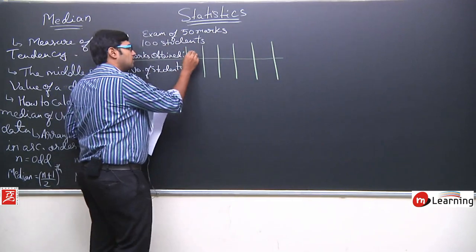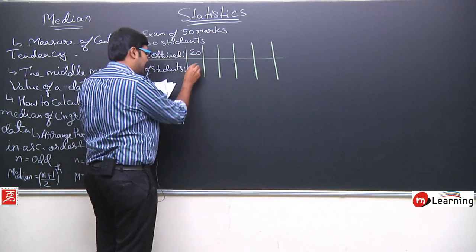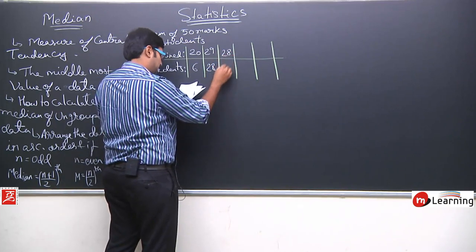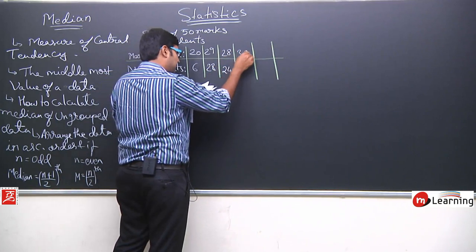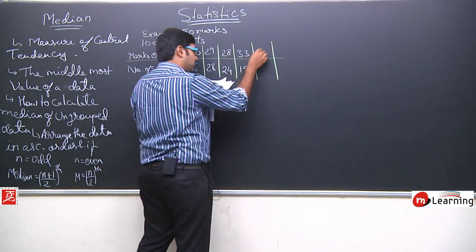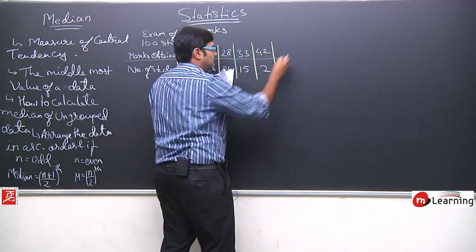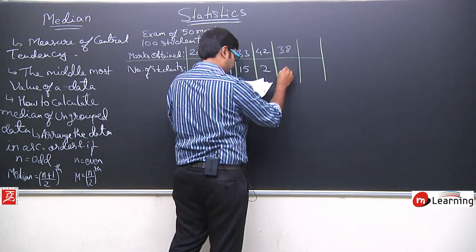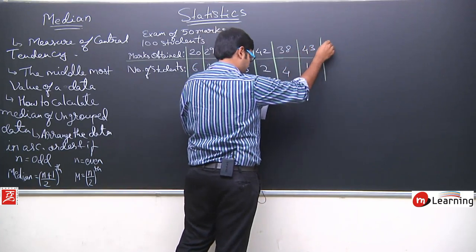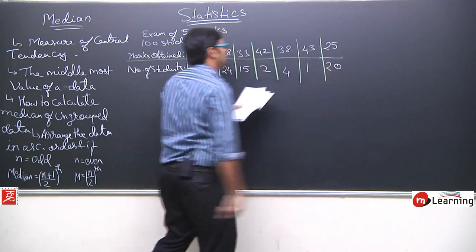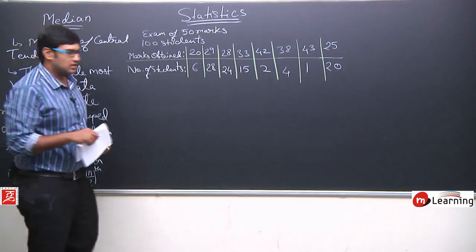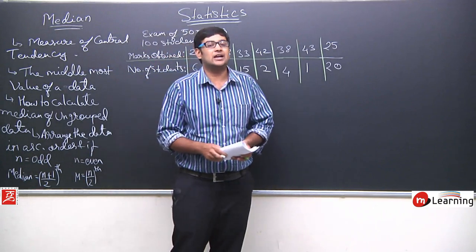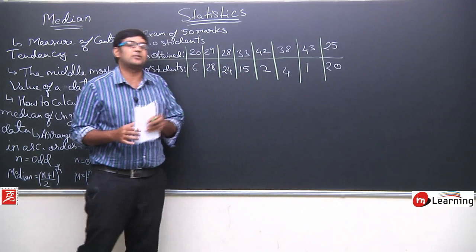The marks obtained and number of students: 20 marks – 6 students, 29 marks – 28 students, 28 marks – 24 students, 33 marks – 15 students, 42 marks – 2 students, 38 marks – 4 students, 43 marks – 1 student, 25 marks – 20 students. This is the data of a 50-mark exam in which 100 students appeared.